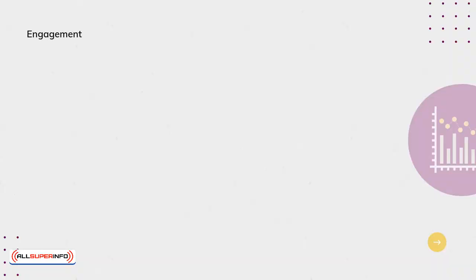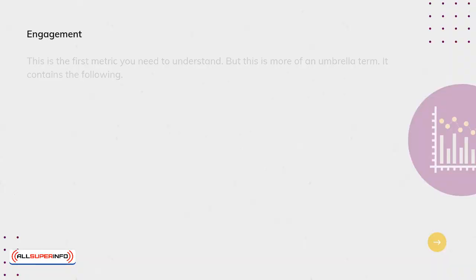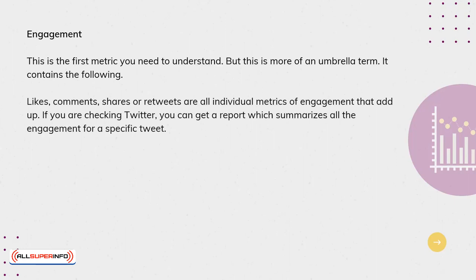Engagement. This is the first metric you need to understand, because this is more of an umbrella term. It contains the following: likes, comments, shares, or retweets — all individual metrics of engagement that add up. If you are checking Twitter, you can get a report which summarizes all the engagement for a specific tweet.